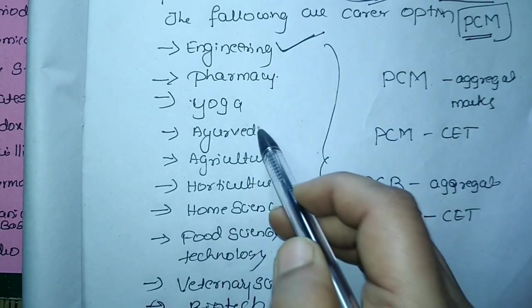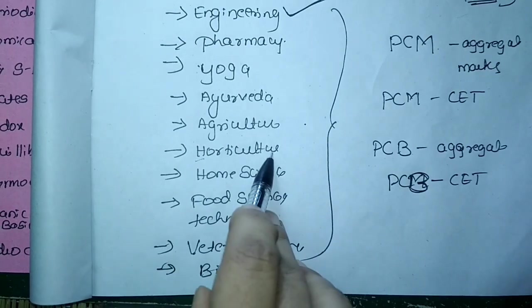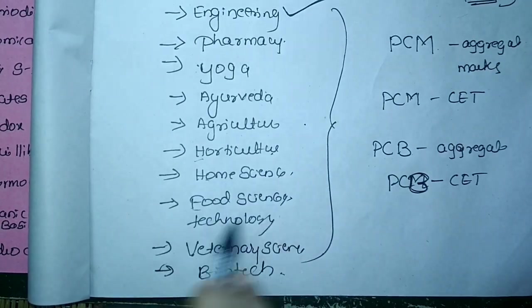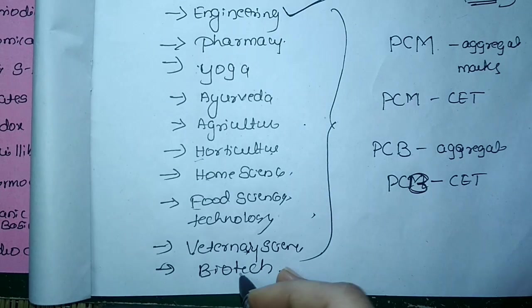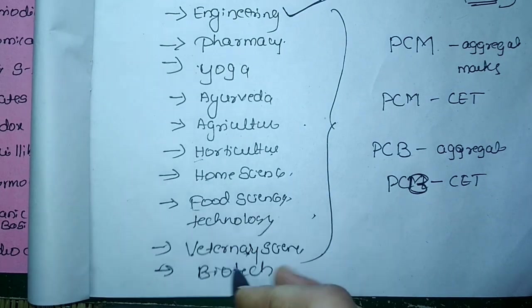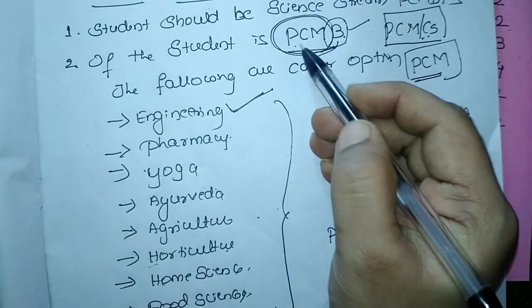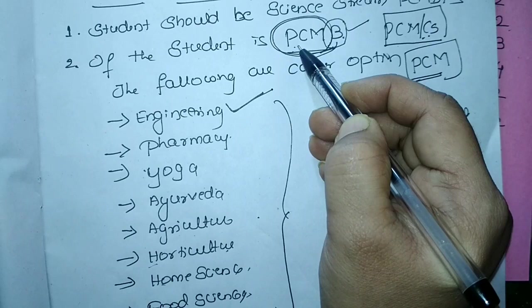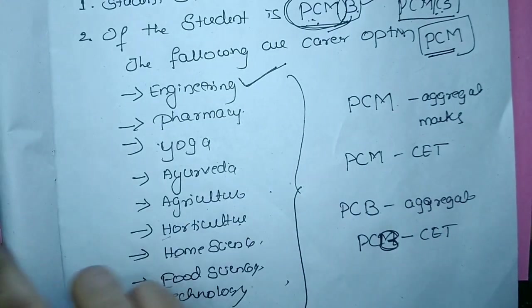They can go to pharmacy, yoga, ayurveda, agriculture, B.S. in agriculture, B.S. in horticulture, home science, food science and technology, veterinary science very important, and some of the biotechnology courses like this number of courses. So the students who have taken PCMB have more options means they can opt engineering or they can opt these following courses as well.